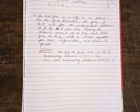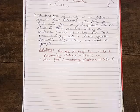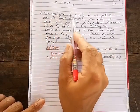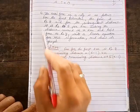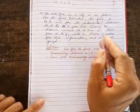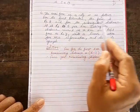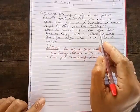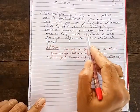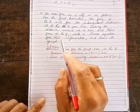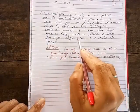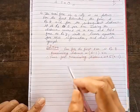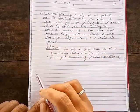This is from the chapter Linear Equations in Two Variables, Exercise 4.3, Question 4. The question states: the taxi fare in a city is as follows — for the first kilometer the fare is rupees 8, and for the subsequent distance it is rupees 5 per kilometer. Taking the distance covered as x kilometers and the total fare as rupees y, write a linear equation for this information and draw its graph.